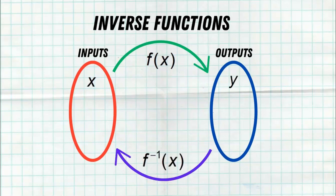An inverse function simply goes the other way around — it takes the outputs and gives us inputs. We denote an inverse function with f raised to the negative one. Now that does not mean an exponent; that negative one is not an exponent. We're just using that f with the little superscript of negative one to emphasize that we're going backwards, working with an inverse function that takes outputs and creates inputs. An inverse function is also a function, so it also has to follow the same rule where we cannot have multiple inputs going to multiple different outputs.